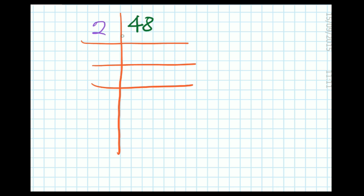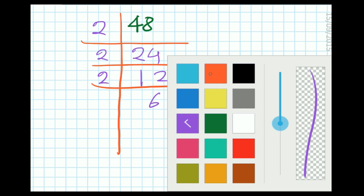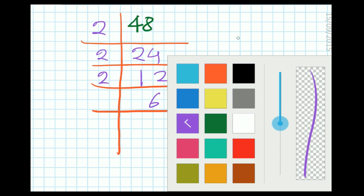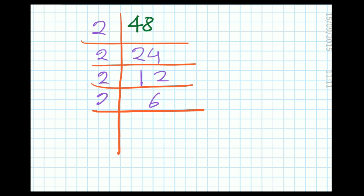So 2 times 24 is 48. 24 is again an even number, so I will divide by 2 to get 12. 12 is again an even number, so we divide by 2 to get 6. Again, 6 is an even number, so it is divided by 2, giving us 3.